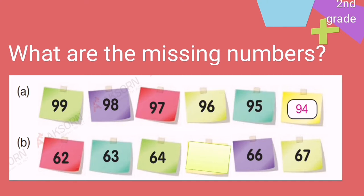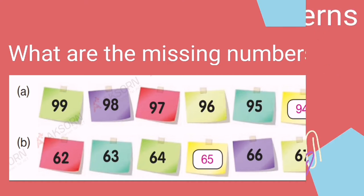94. Good job! For letter B, we have 62, 63, 64 — what will be next? You notice that we add one to each number. So 64 plus 1 will be 65, then 65 plus 1 is 66, and then next is 67.